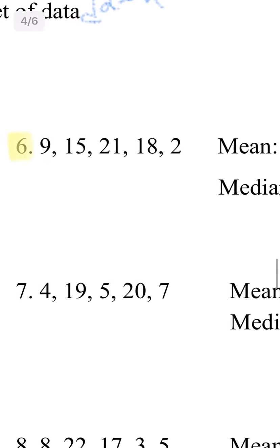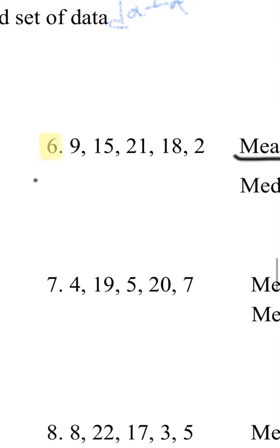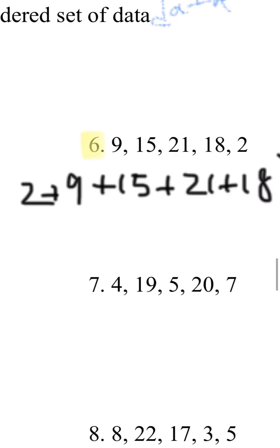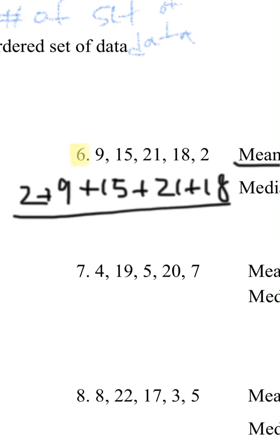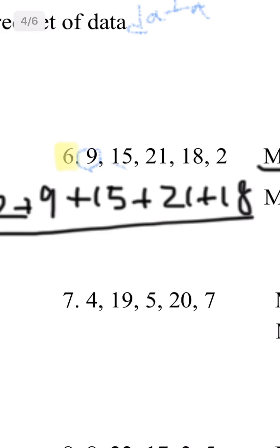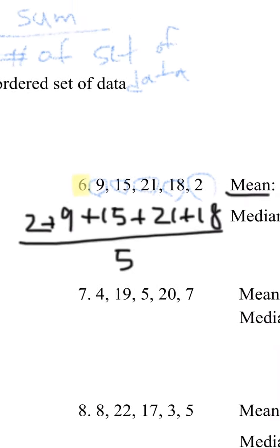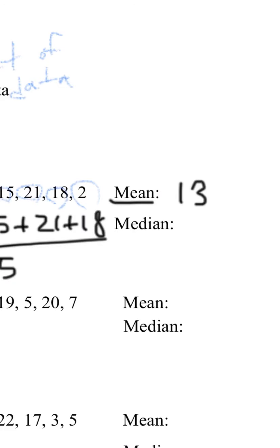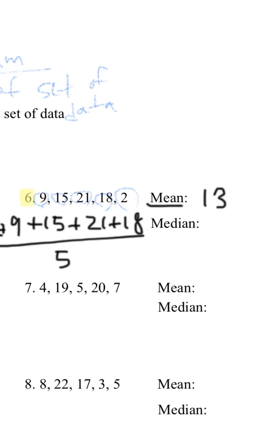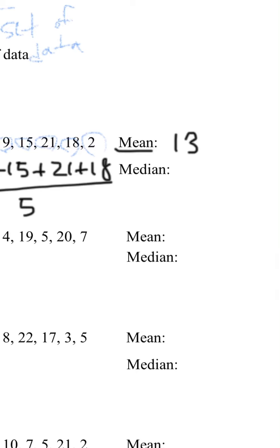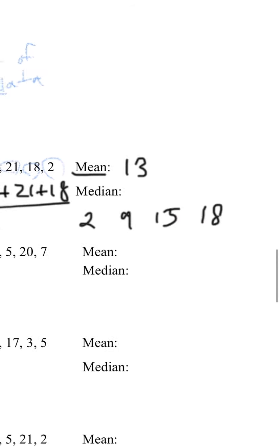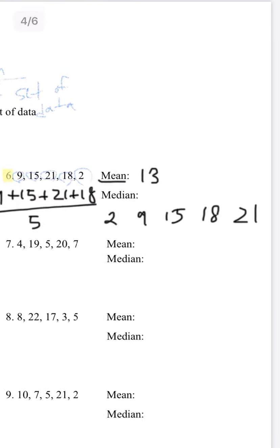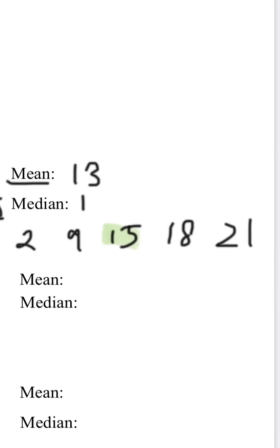Let's look at number six. To find the mean, get the sum first: 9 plus 15 plus 21 plus 18 plus 2, all divided by five — because there are five numbers. That equals 15. For the median, list from smallest to largest: 2, 9, 15, 18, 21. The middle number is 15, so your median is 15.